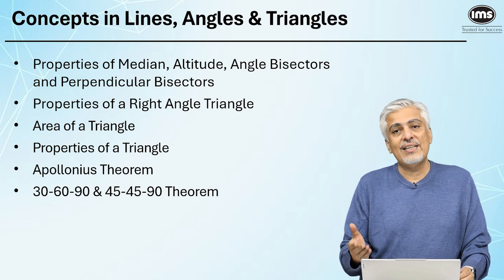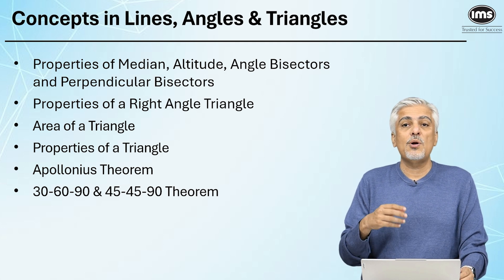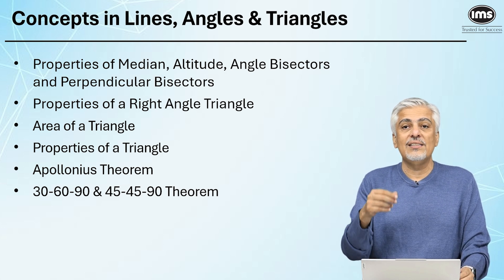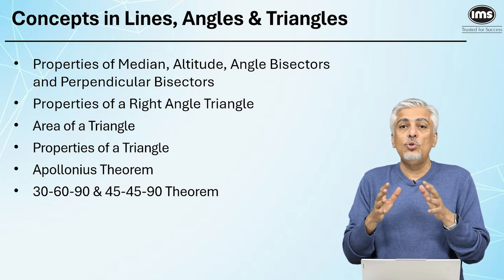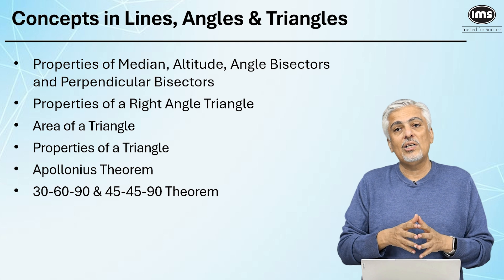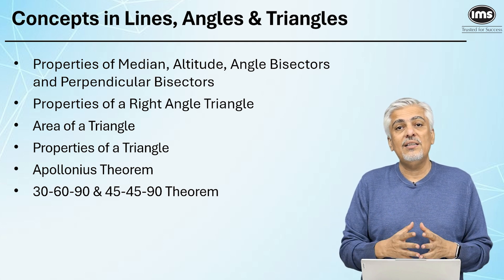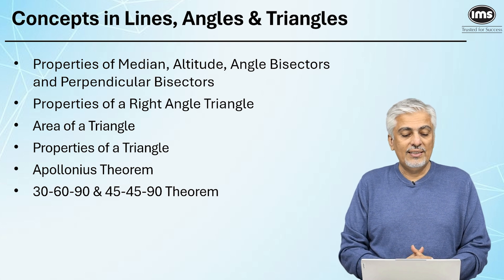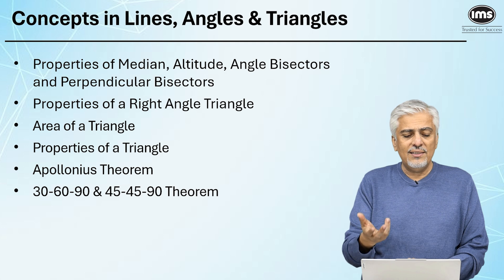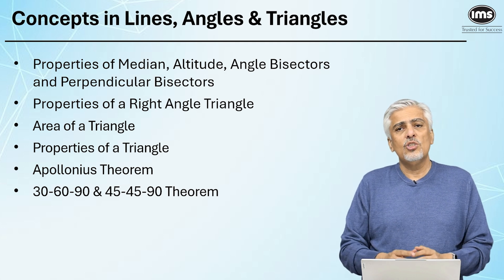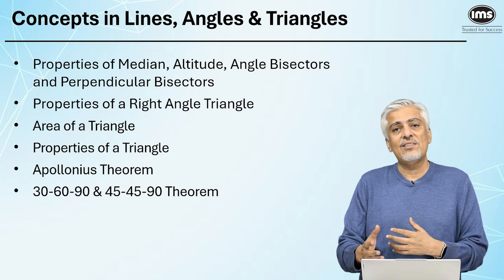Properties of a right angle triangle, as I said, 30-60-90 or 45-45-90 can come over here. What are the special properties which work only in a right angle triangle, especially with similarity? If you drop a perpendicular, that itself can be a huge part. Taking a right angle triangle, dropping a perpendicular, the three triangles are similar and what all can you get from there? A lot of questions around that can be asked. Then Apollonius theorem, as I said, you should know Apollonius theorem and 30-60-90 and 45-45-90. More or less this covers all the properties of a triangle, lines, angles and triangle.